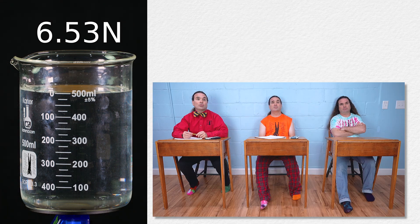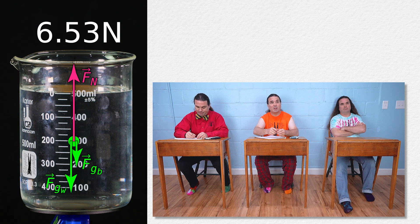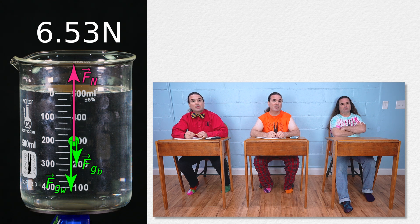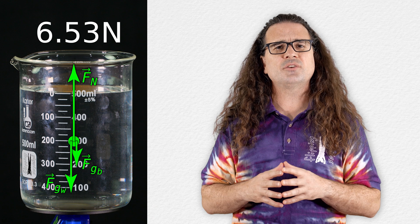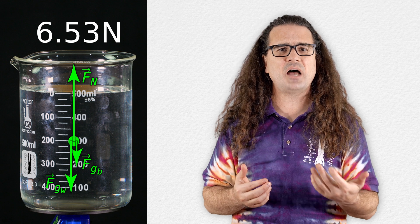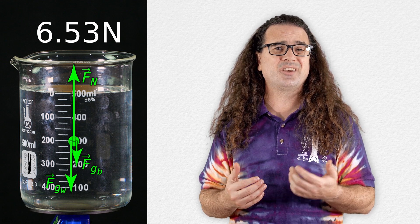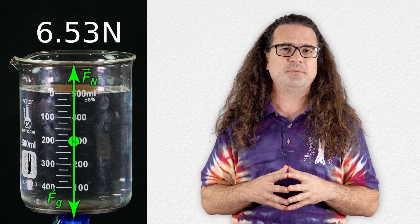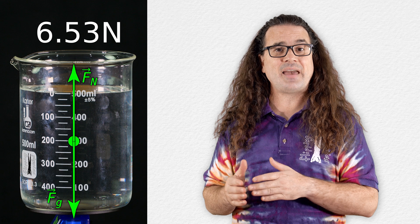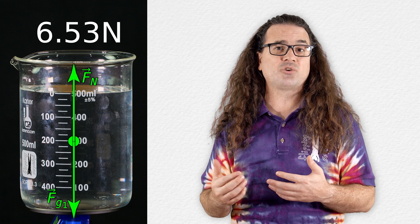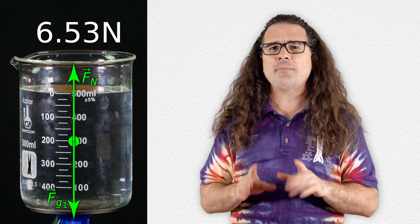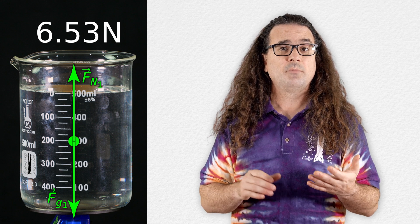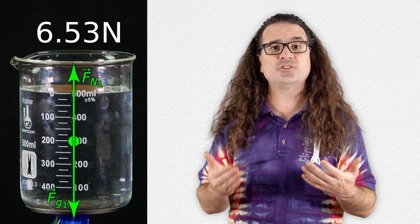There is a force of gravity down on the beaker and a force of gravity down on the water, and there is a force normal up on the beaker — that acts on the beaker and water system. I'm going to combine the forces of gravity or weights of the beaker and water into one force of gravity, and I'm going to identify that as force of gravity one, because the force of gravity is going to change in these demonstrations. I'm also going to identify this as force normal one, because the force normal may change during these demonstrations.